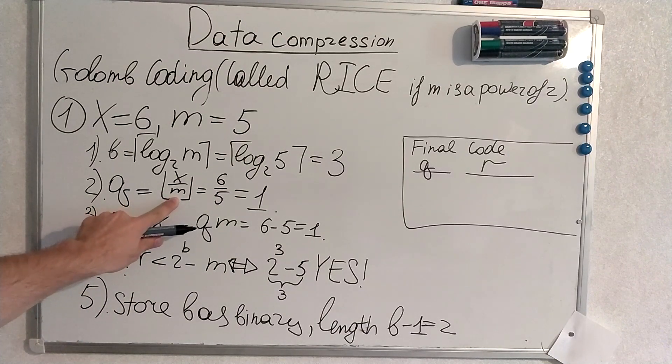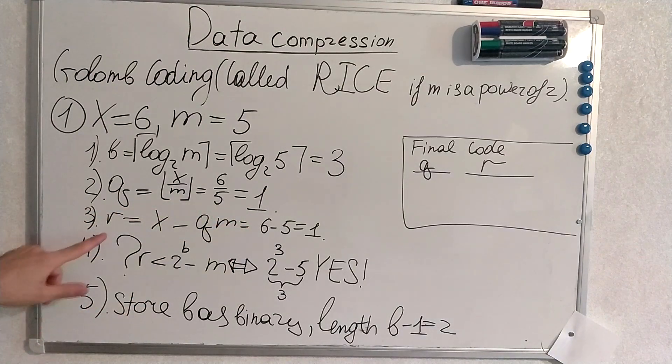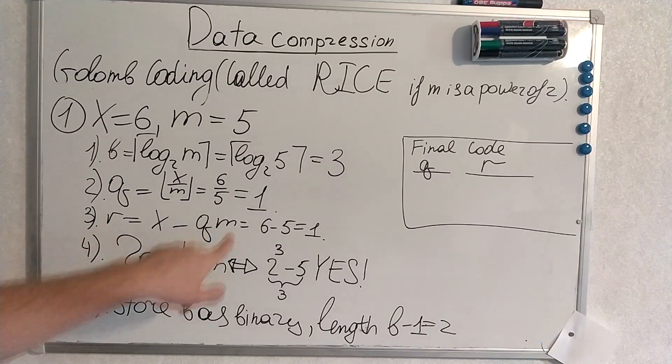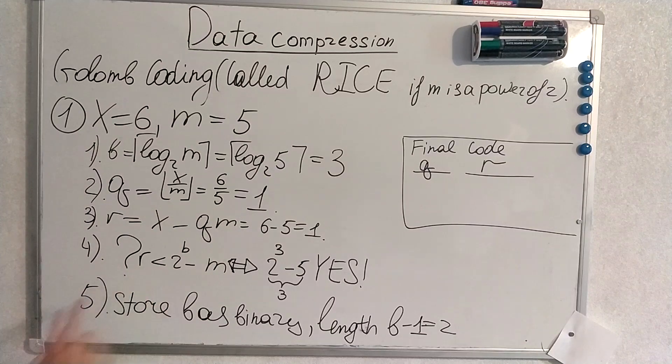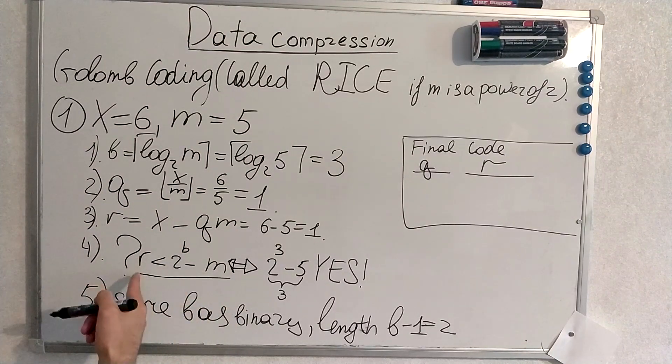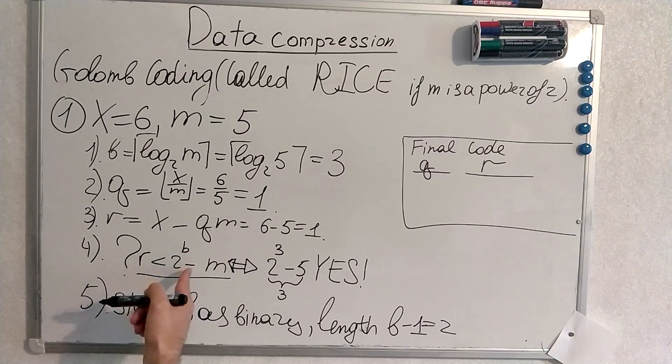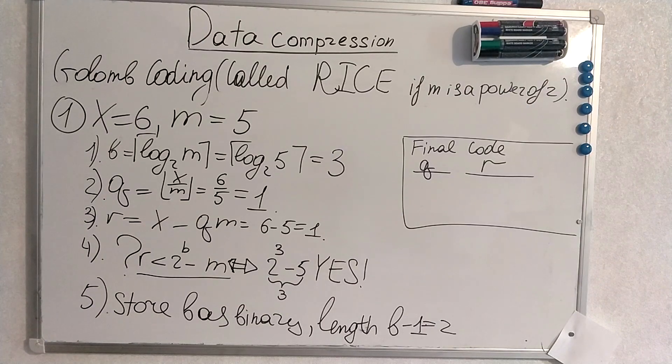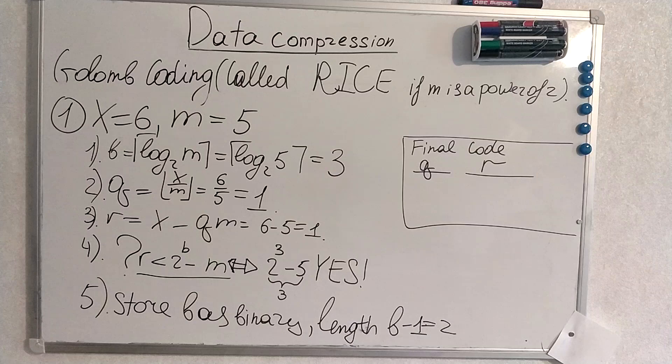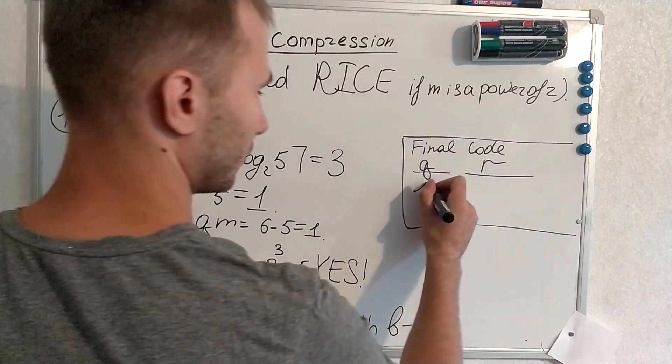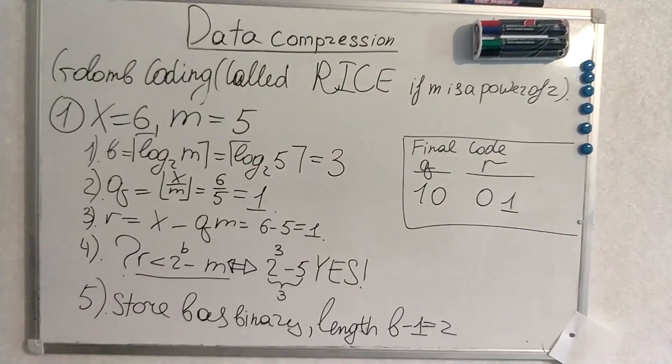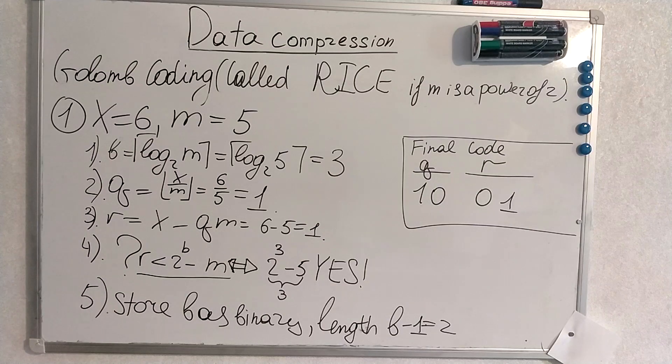Then q also calculated. Because we floor here it will be 1. Then we calculate r. r is x minus q multiplied by m. We know all of this because we have calculated q here. m is given. And then we check if the inequality holds. So r has to be smaller than 2 to the power of b minus m to hold the inequality. And this inequality actually holds here. Thus we store b as binary number with the length of b minus 1 which equals to 2. I advise you to calculate it yourself and to produce the code. But I will give you the code. This is the correct code to encode x when x is 6 with m equals 5.